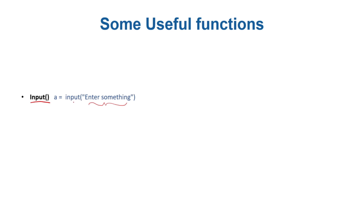One important thing is that no matter what the user enters, the variable will have type string — str. So even if you enter a number like 12 or 34, that will be received as a string. There are ways to convert a string to a number if needed, but whatever you receive using the input function will always be a string.